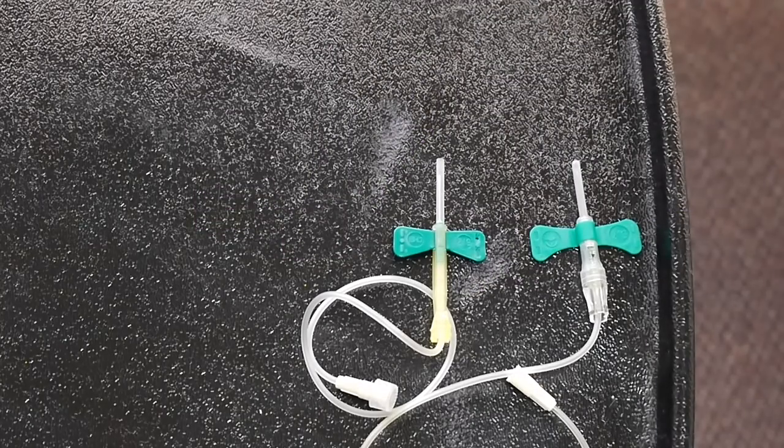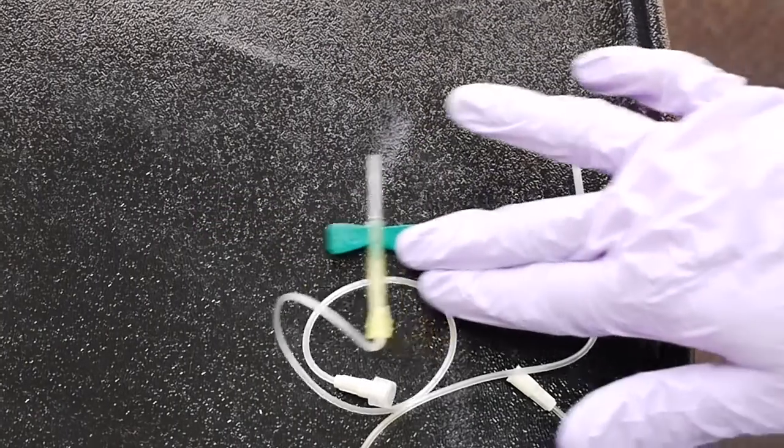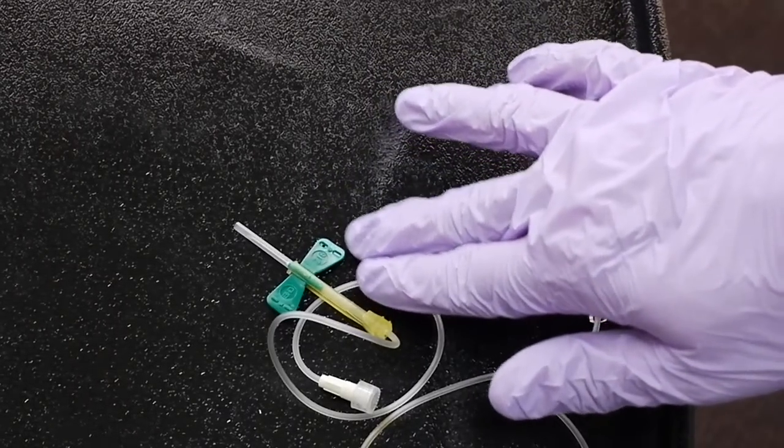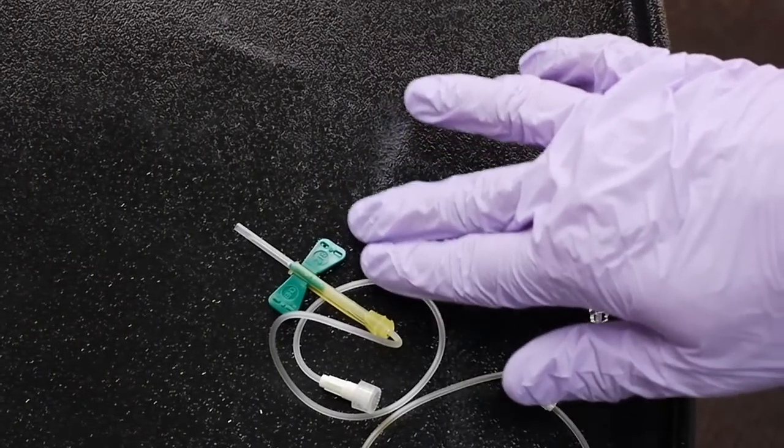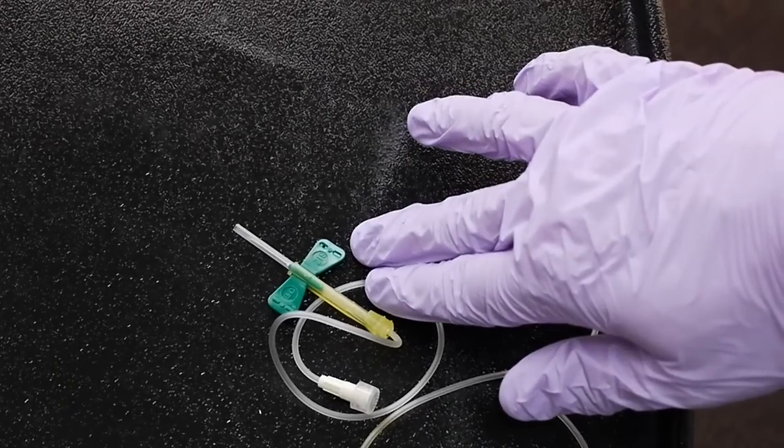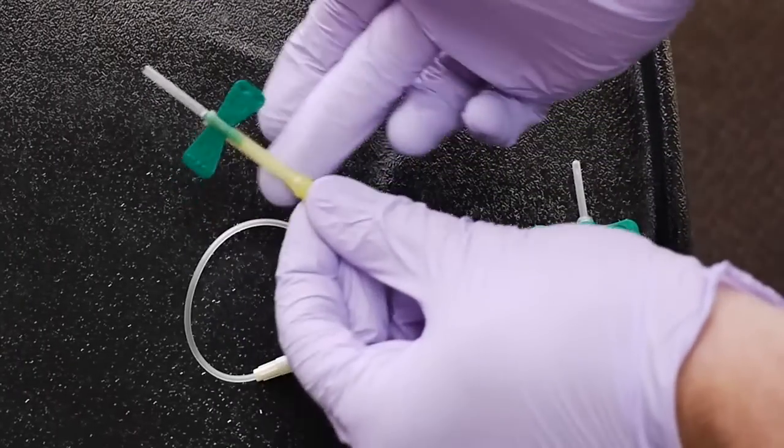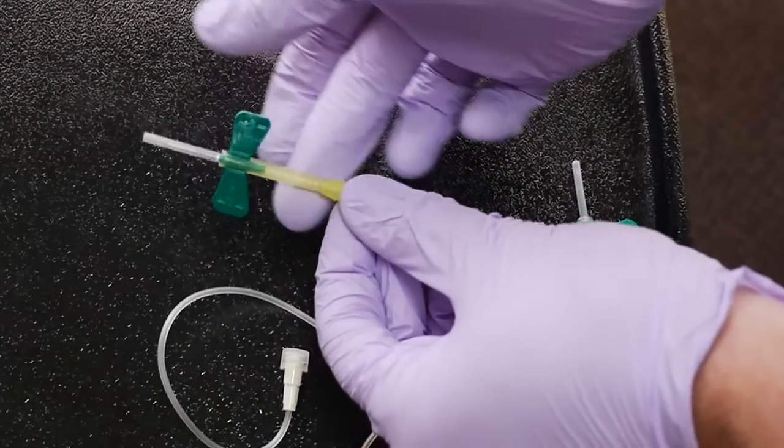Next device we're going to use is the butterfly. Now remember, the butterfly is the number one device that is a cause of a dirty needle stick. So this one, the first one, has a kind of retractable needle.